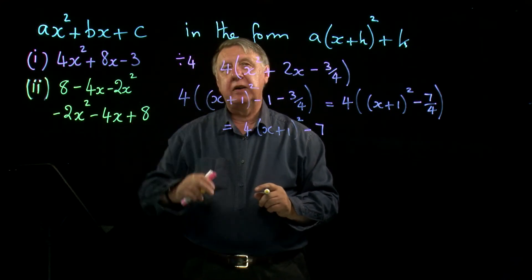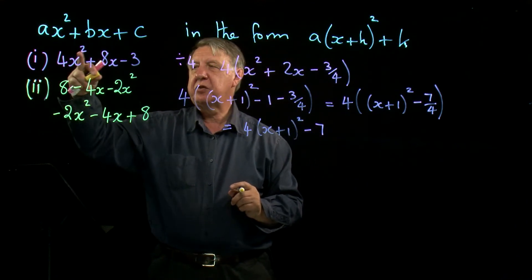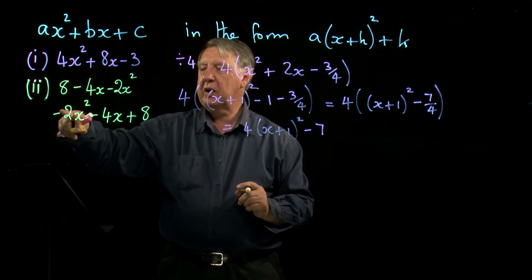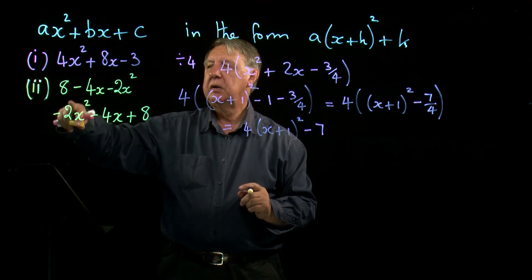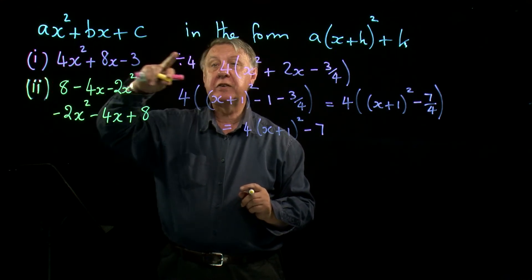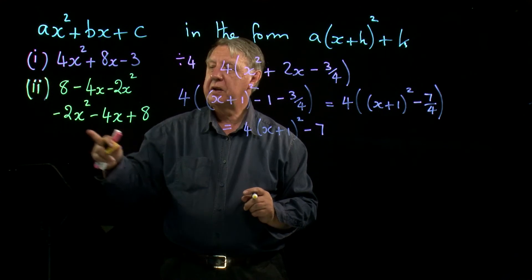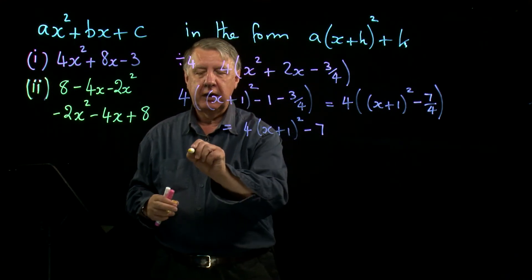But of course if you write it like that, the rules that we've just developed up here are going to be the same. I'm going to be saying I don't like that negative two there - I didn't like that four there. What did I do? I divided by four. So let's divide this by negative two.